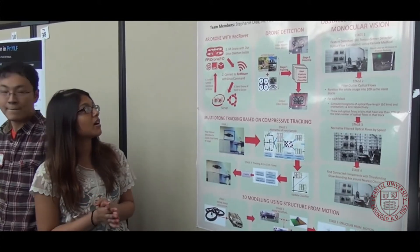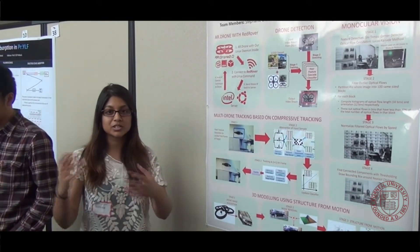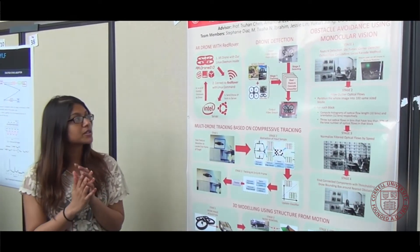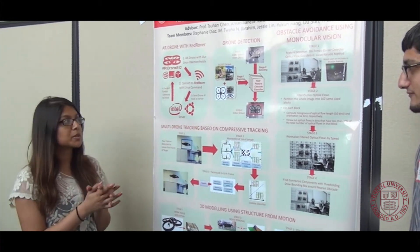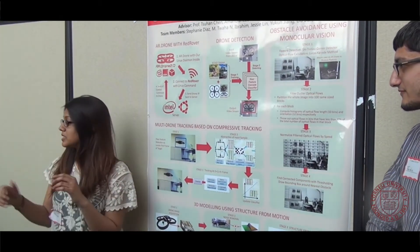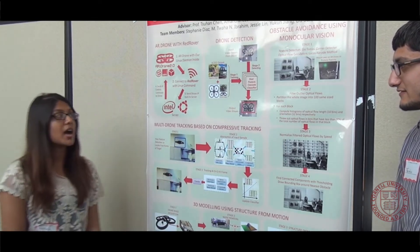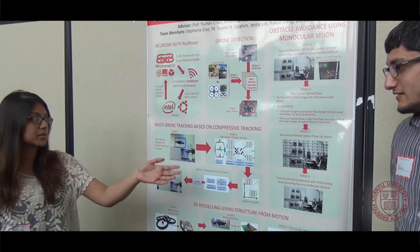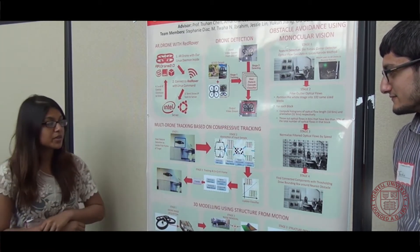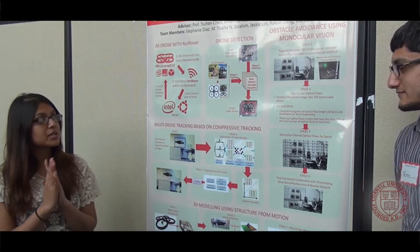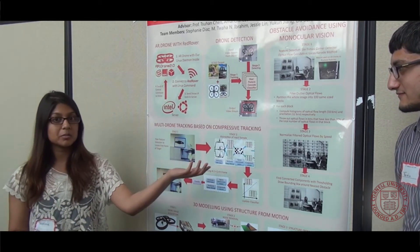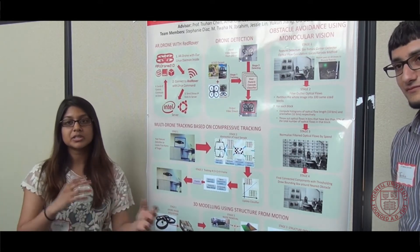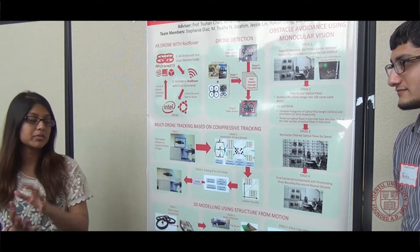The different things that we worked on include putting the AR drone on Red Rover so we can control it from different buildings even on Cornell campus. We also have drone detection — we use the Haar cascade classifier in order to detect another drone with one drone. From that we can also track another drone using a compressive tracking method. Another important thing we implemented was obstacle avoidance using binocular vision, which uses a single camera and no other sensors to detect obstacles from the images captured.